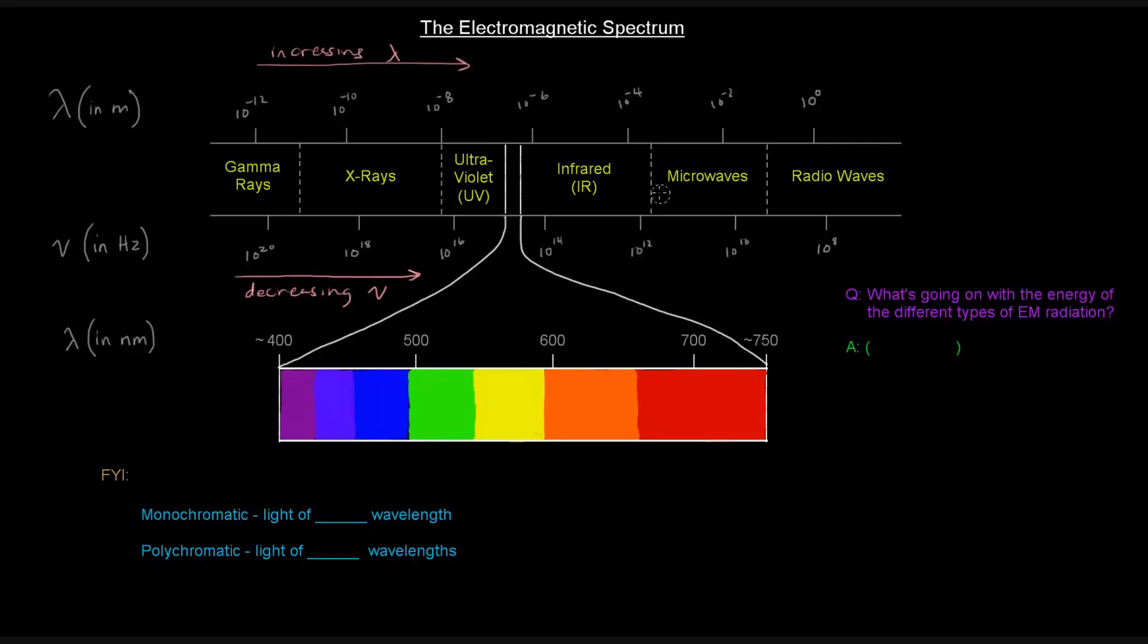Now, in this tiny little section here, we've got the visible spectrum. That's the part of the spectrum of light that we can actually see. It's really small relative to the overall spectrum. We can see that this visible portion is specifically the range of 400 nanometers to 750 nanometers. And we see that this is the colors of the rainbow.